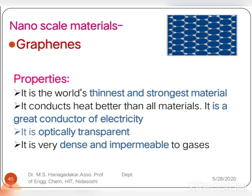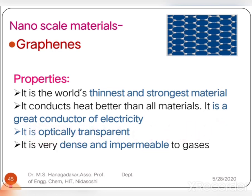Properties of graphene: it is the world's thinnest and strongest material. It conducts heat better than all other metals, and is therefore a great conductor of electricity. It is also optically transparent so light can penetrate through it, yet it is dense and impermeable to other gases.